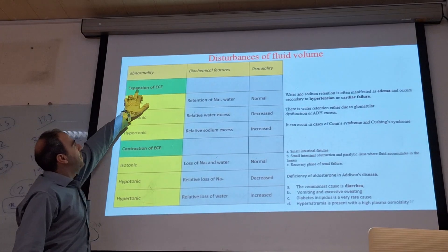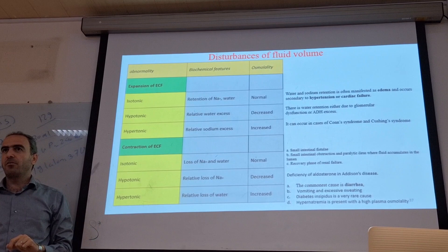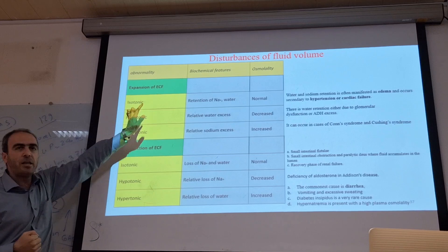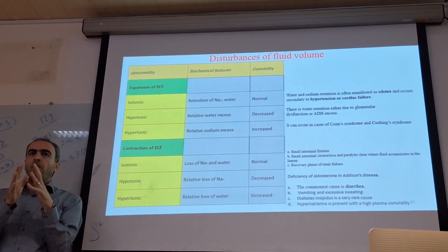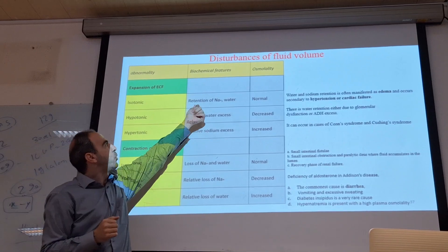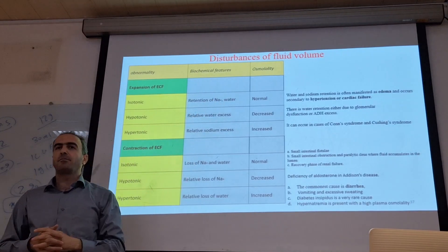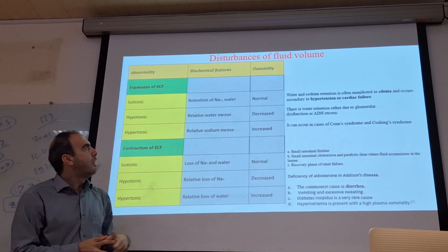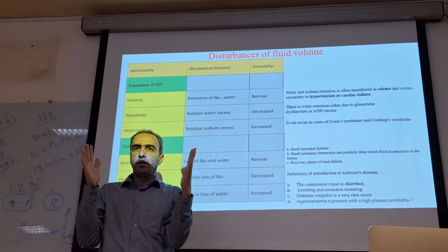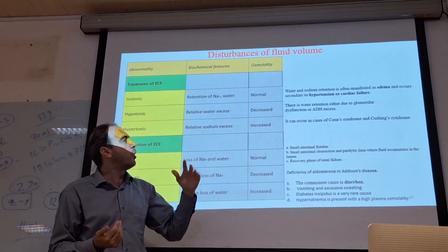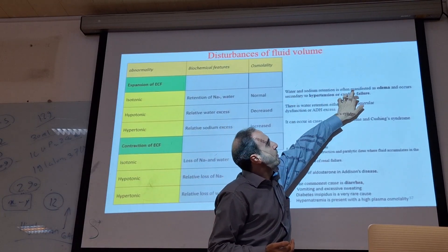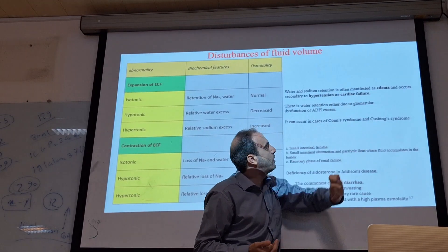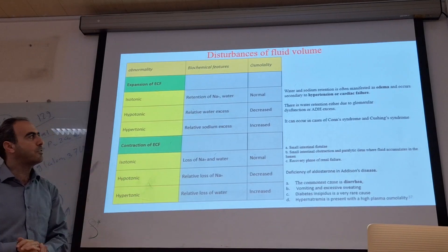When we have an expansion of ECF — extracellular fluid expansion — it can be of three or four types. One of them is isotonic. ECF is increased istonically, meaning we have retention of sodium and water together. So it is isotonic but the ECF is expanded. Osmolality is normal because it is isotonic. It can be due to water and sodium retention, which often leads to hypertension and cardiac failure.